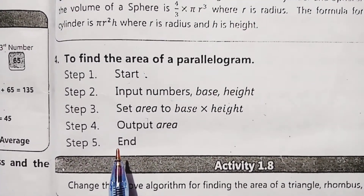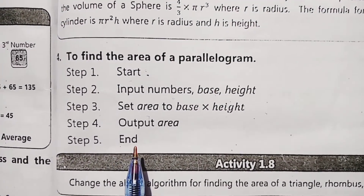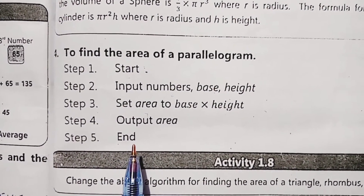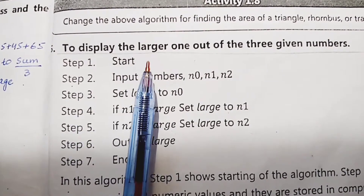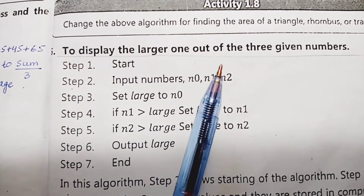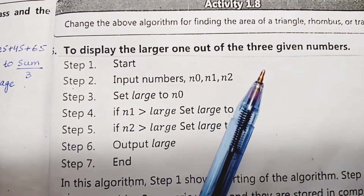Step number 5 is the end of the algorithm. Example number 5 is to display the larger one out of three given numbers.